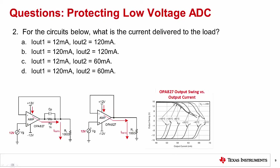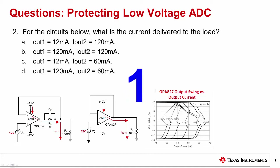Question 2: for the circuits below, what is the current delivered to the load? The correct answer is C: Iout1 is equal to 12 milliamps and Iout2 is equal to 60 milliamps. In this case, the very low output resistance is effectively a short on the output. The amplifier on the left's output current is limited by RP, and most of the 12-volt output will drop across the 1 kilohm RP. 12 volts over 1 kilohm results in 12 milliamps. For the other amplifier, the output would ideally be 12 volts across the 100 ohm resistor, or 120 milliamps. However, the amplifier's output is limited by the short circuit output protection. Looking at the curve on the right, the output is limited to about 60 milliamps at 25 degrees Celsius.